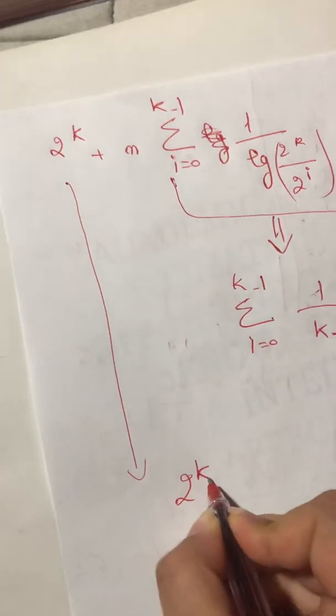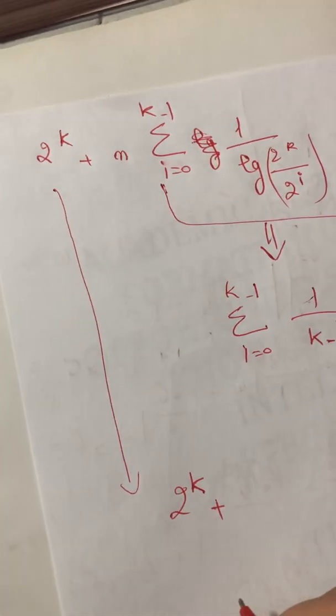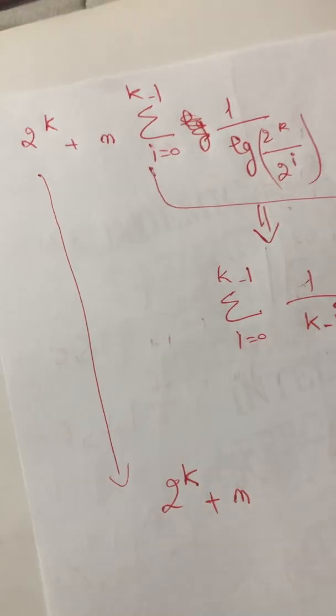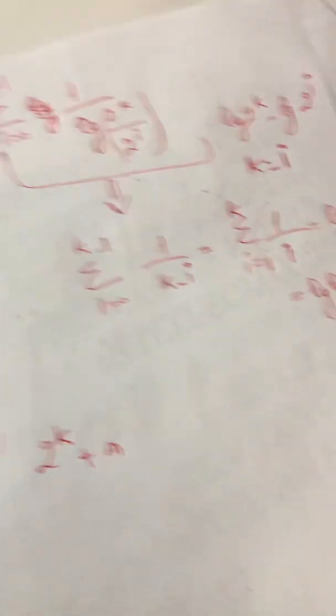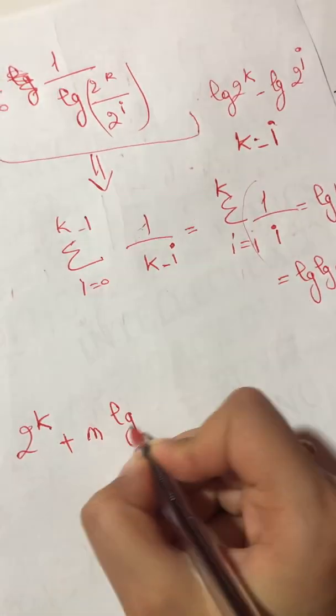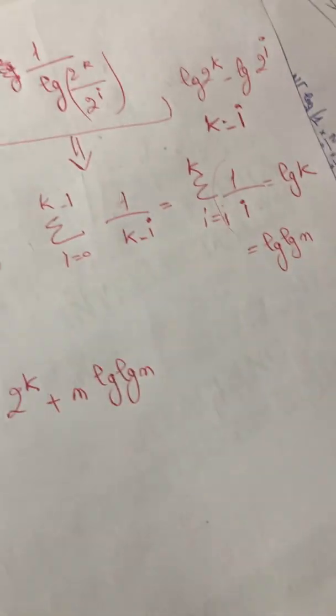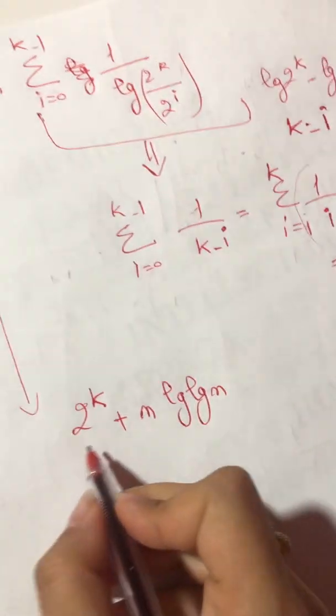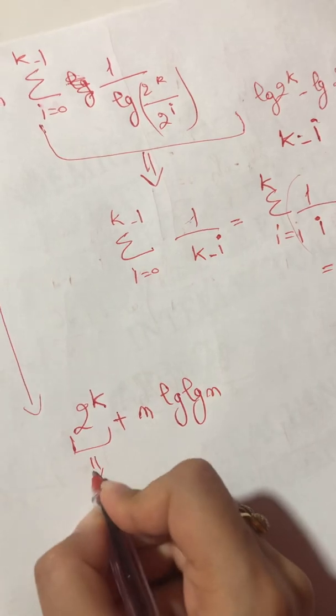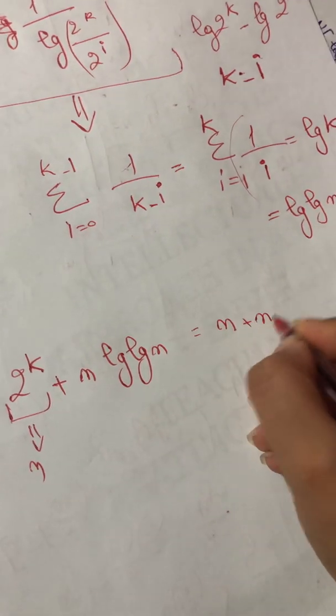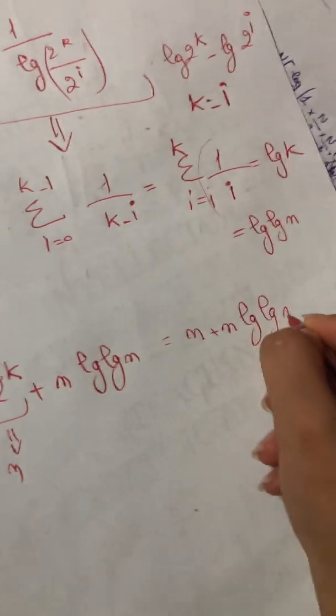So now I return back to what I have here. I have 2^k plus n. The summation, I have the answer of it here: log log n. And I have 2^k equals n. So it's equal to n plus n log log n.